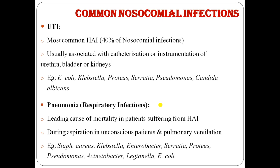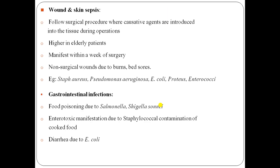Pneumonia is the second most common nosocomial infection and is a leading cause of mortality in patients with hospital acquired infections. It occurs during aspiration in unconscious patients and through pulmonary ventilation or respiratory inhalation. Wound and skin sepsis follows surgical procedures where causative agents are introduced into the tissue during operation — higher in elderly patients and also from non-surgical wounds due to burns and bed sores.